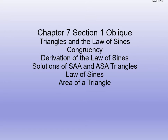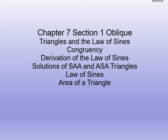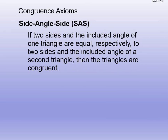Welcome back to Math 1720. We are starting chapter 7 now. We're going to talk about oblique triangles and the law of sines. Oblique triangles are non-right triangles, so we can't use the normal SOH-CAH-TOA. We're going to use the law of sines to do our calculations, and we have to talk about different congruency axioms.